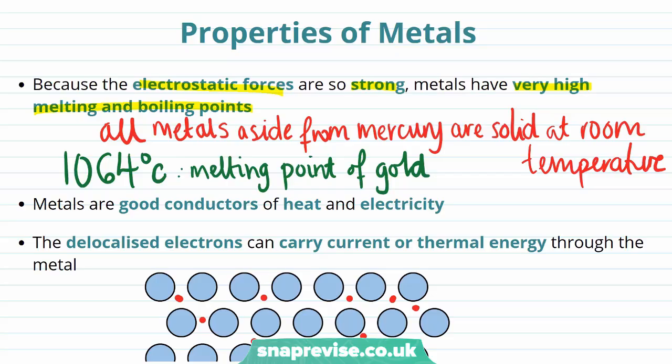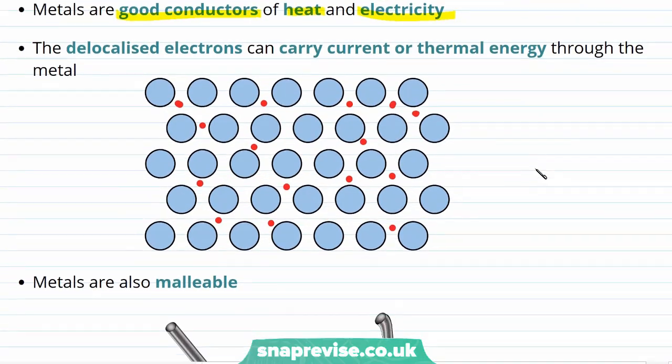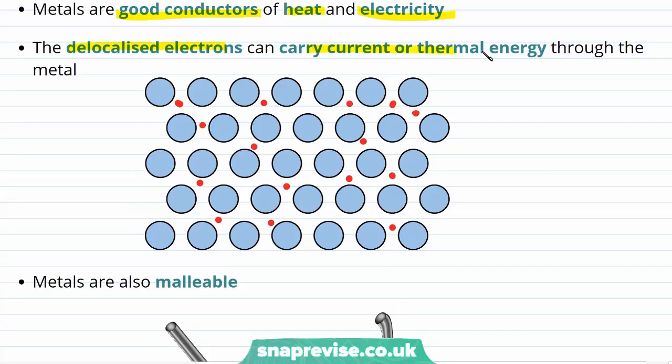Another characteristic property of metals is that they are really good conductors of heat and electricity, which follows directly from their structure in which delocalised electrons can carry current or thermal energy throughout the metal. This follows from the fact that conduction of electricity requires charged particles such as ions or electrons that are free to move, and this is exactly what you have in metallic bonding.